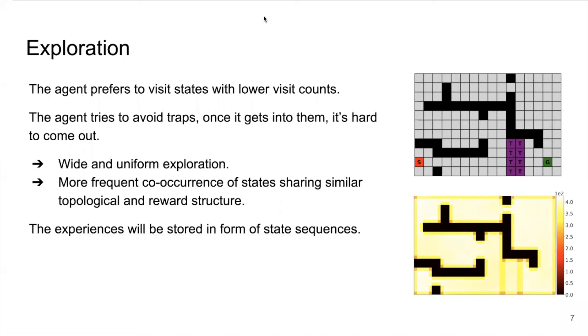Before I introduce how to do exploration, let's make the environment a bit more complex. Now we add some states of traps marked as T, getting to them will cause huge negative rewards. During exploration, the agent prefers to visit states with lower visit counts. In addition, the agent also tries to avoid traps. Once they get into them, then it is relatively hard to come out again. As shown in this heatmap of visit counts below, this results in not only wide and uniform exploration but also frequent co-occurrence of states sharing similar topological and reward structure.